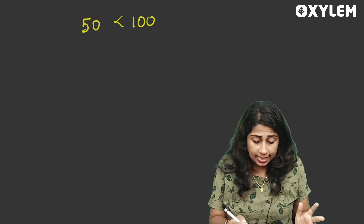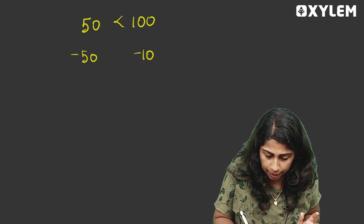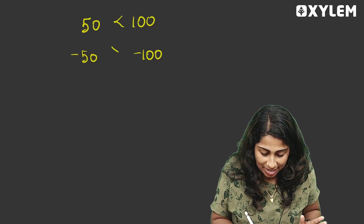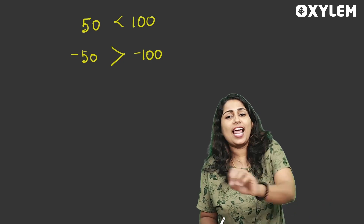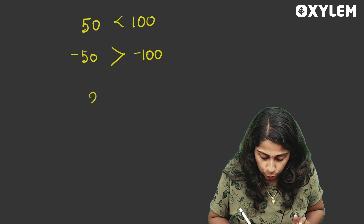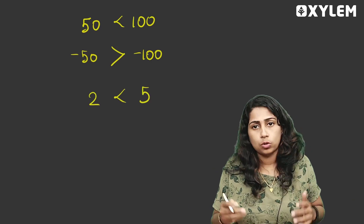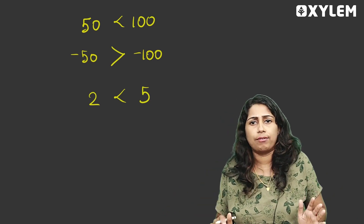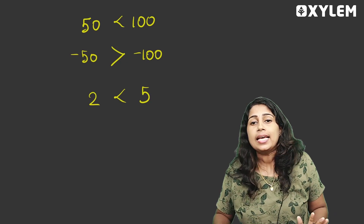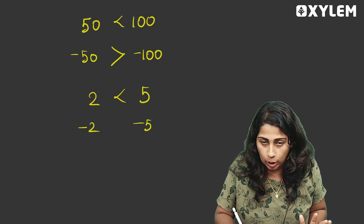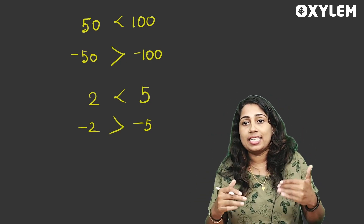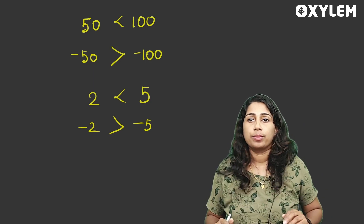Consider negative 50 and negative 100. Negative 50 is greater than negative 100 because it is closer to zero. Similarly, 2 is less than 5 — that is correct. But with negatives: negative 2 is bigger than negative 5. In the case of negative numbers, the inequality reverses.